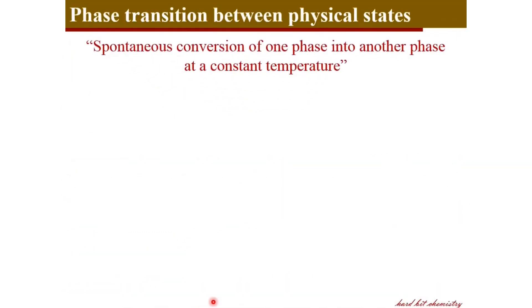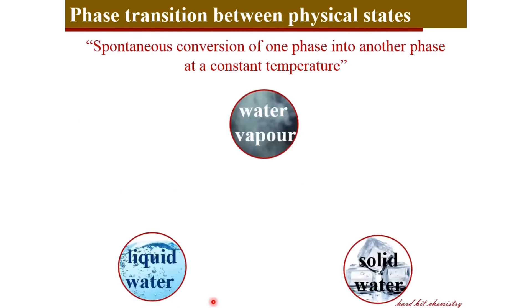Now we will see phase transition between different phases. Phase transition is a spontaneous conversion of one phase to another at a given or characteristic temperature. Consider water — our familiar example. Water has three different physical states, which are three different phases: a vapor phase, a liquid phase, and a solid phase.